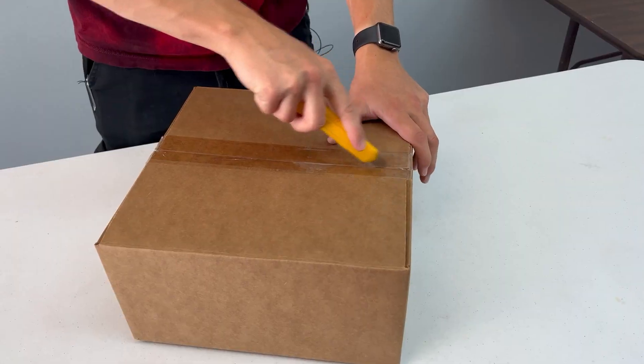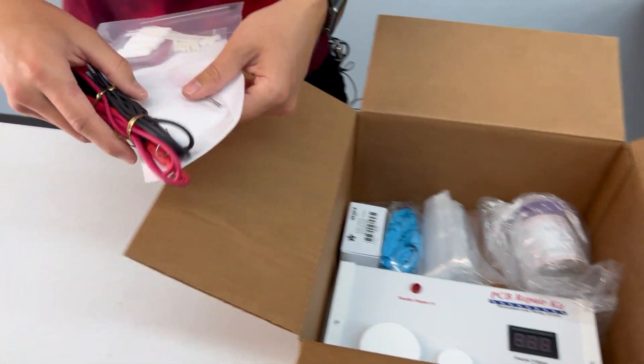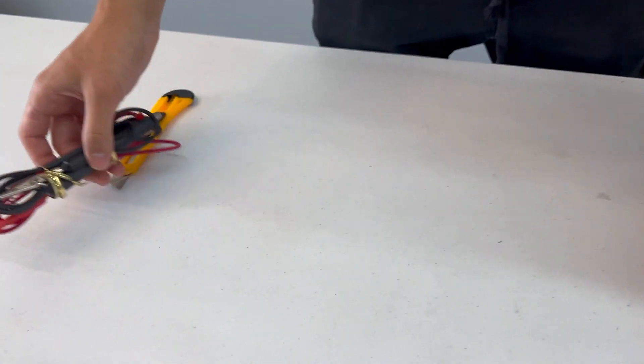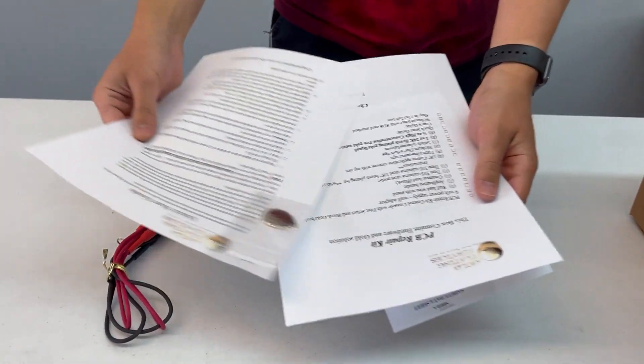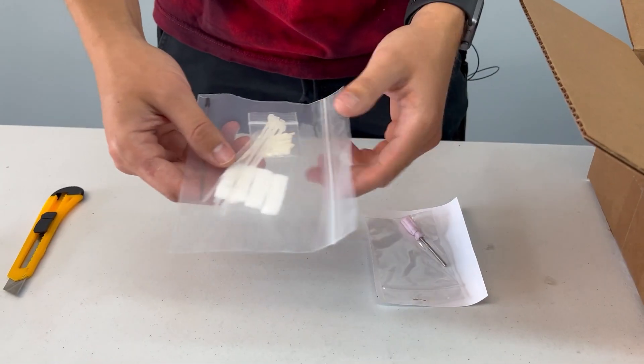All right, so what we have in this box is our handle set with our common lead. We have our quick start guide as well as a checklist of what's inside the box.